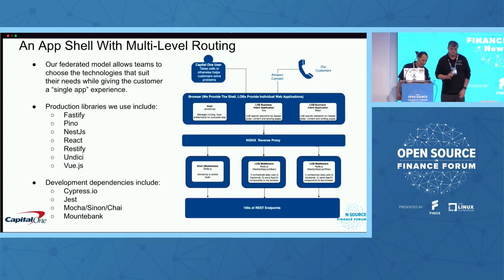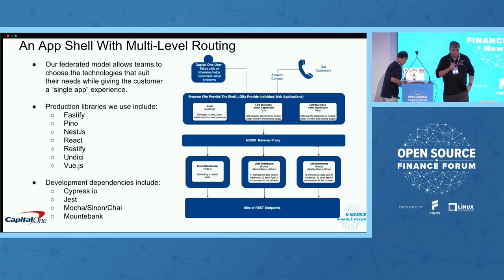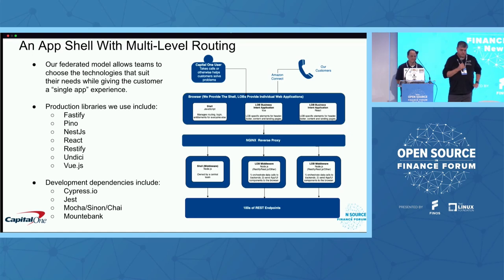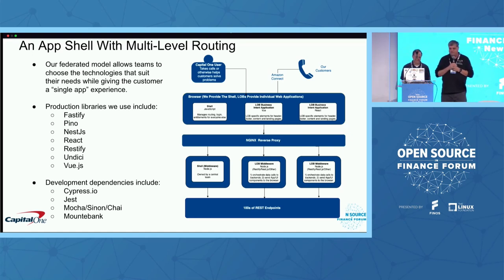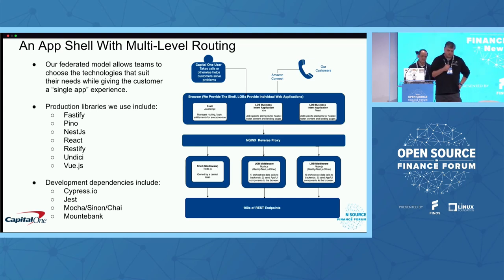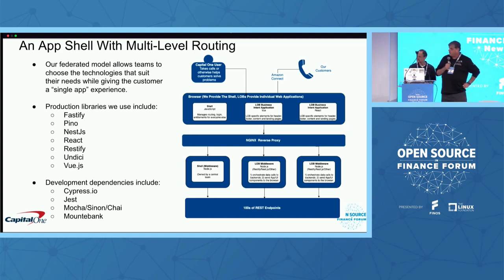I will now turn it over to Steve to talk about the technical details. In general, we're getting more into the deeper details of what we achieved here. Basically, it's an app shell with a special router that allows us to swap applications in and out of the DOM at any particular time the user's navigating. You can see on the diagram on the right, it's basically a three-tier type of architecture.